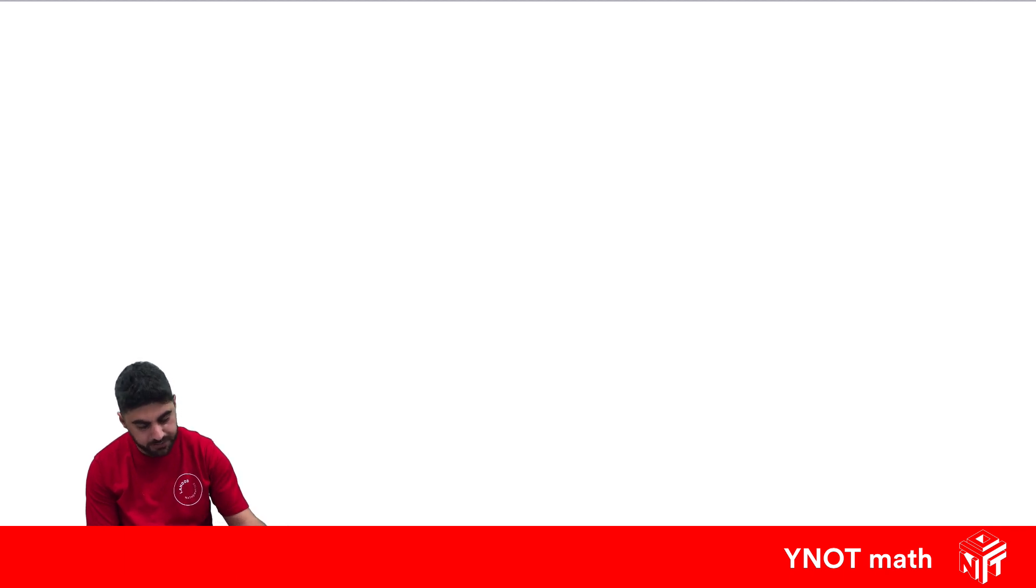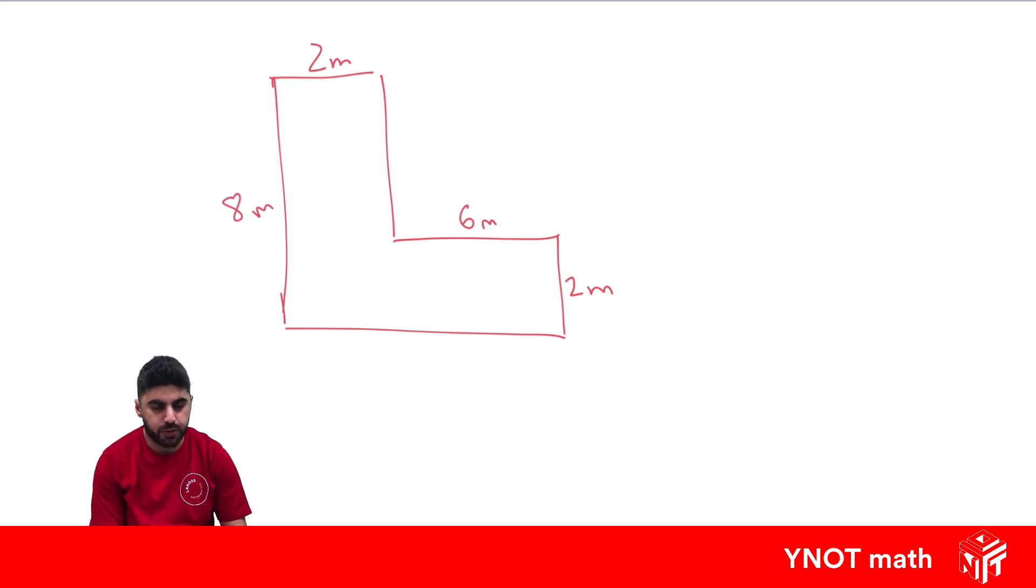Let's look at a composite shape. This L-type shape. So there's two meters, six meters, two meters and eight meters and we have to find the perimeter.